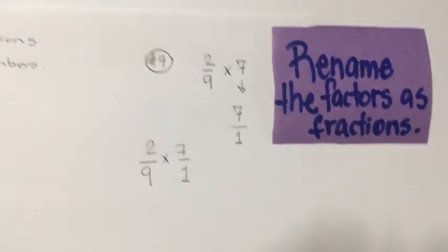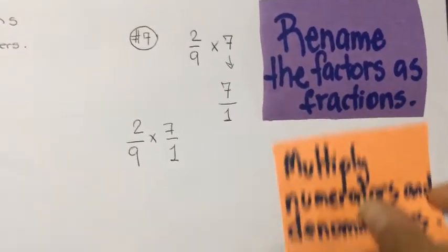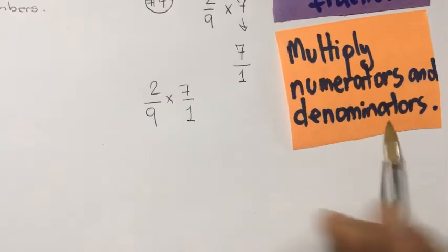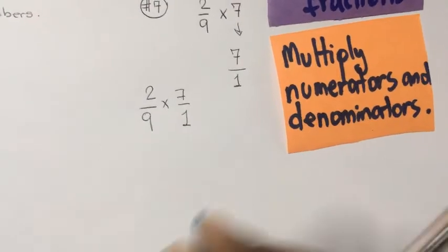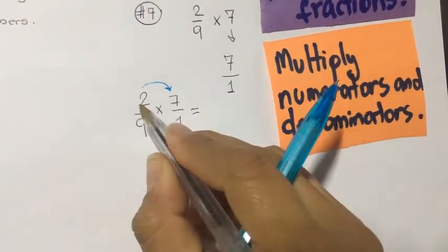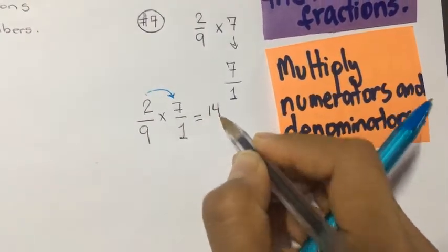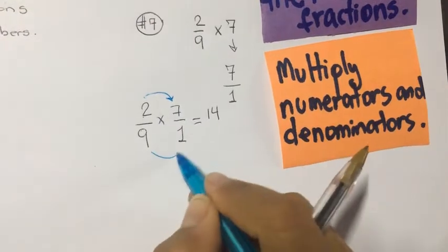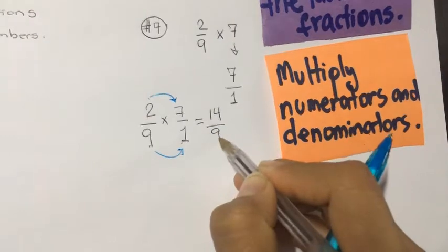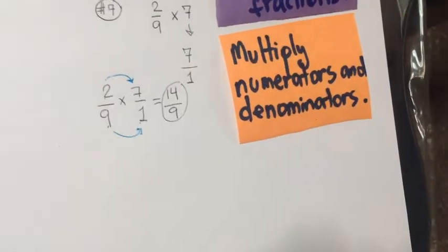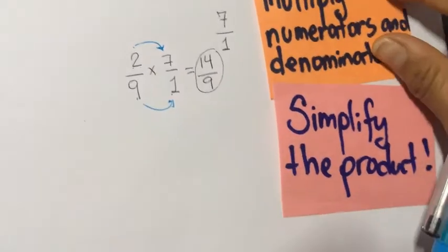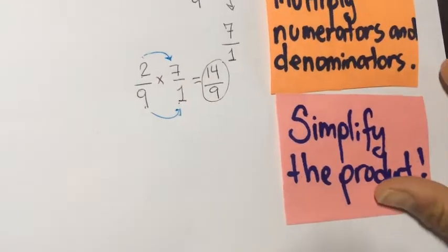Now the second step: multiply numerators and denominators. 2 times 7 is 14. Now multiply the denominators: 9 times 1 is 9. We now have an improper fraction 14/9. The next step is to simplify the product.